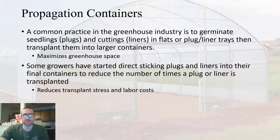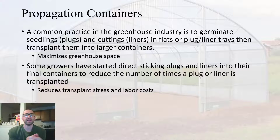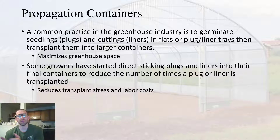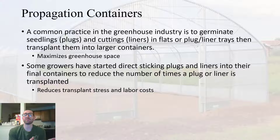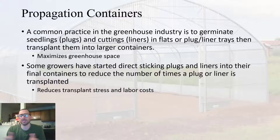That brings us to containers. A common practice in the greenhouse industry is to start your seedlings or cuttings — referred to as plugs or liners — in flats or cell trays, and then later transplant them into other containers. This process helps maximize your greenhouse space. However, some people will plant directly into the containers that are going to be their final containers, which reduces the transplant stress and labor costs of having to transplant your plug or liner to other containers.